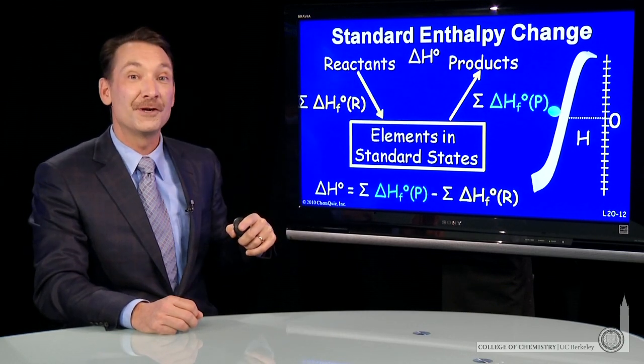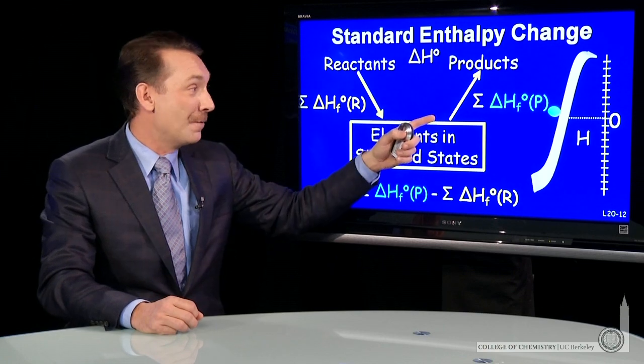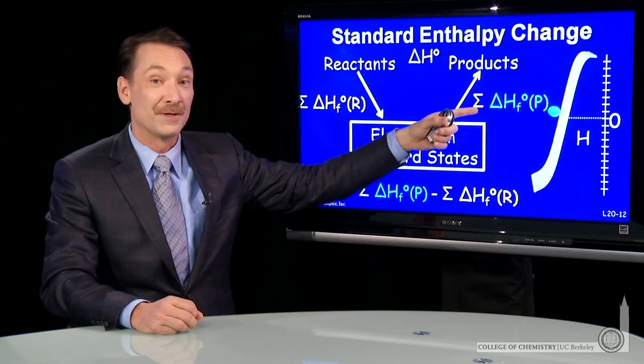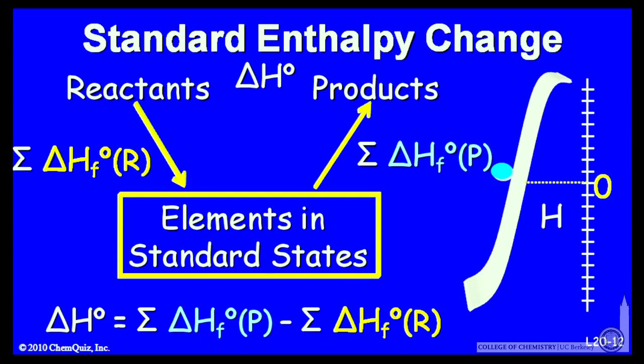That means the enthalpy change for the reaction will be the sum of these two enthalpies: the enthalpy change of formation for all the products and the sum of the enthalpy change of formation for all the reactants.